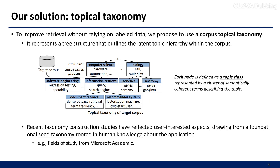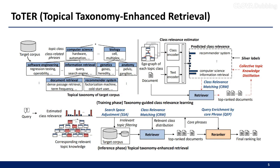Recent studies on taxonomy construction have incorporated aspects of user interest, drawing from a foundational seed taxonomy rooted in human knowledge about the application, such as fields of study from Microsoft Academic. We leverage this taxonomy to provide additional insights, linking queries and documents by discerning their topical relatedness and supplementing missing contexts. We introduce the topical taxonomy enhanced retrieval framework, which systematically utilizes the corpus taxonomy to augment the semantic matching capabilities of PLM-based retrieval.